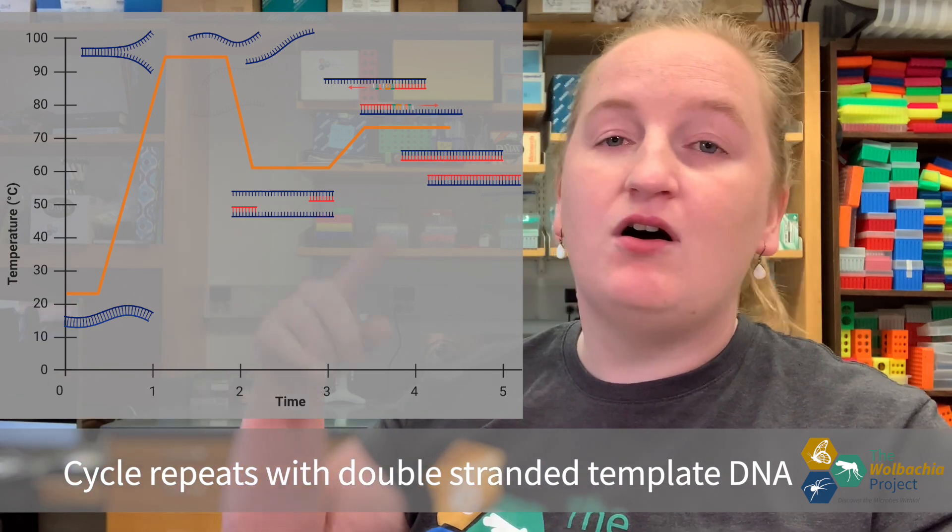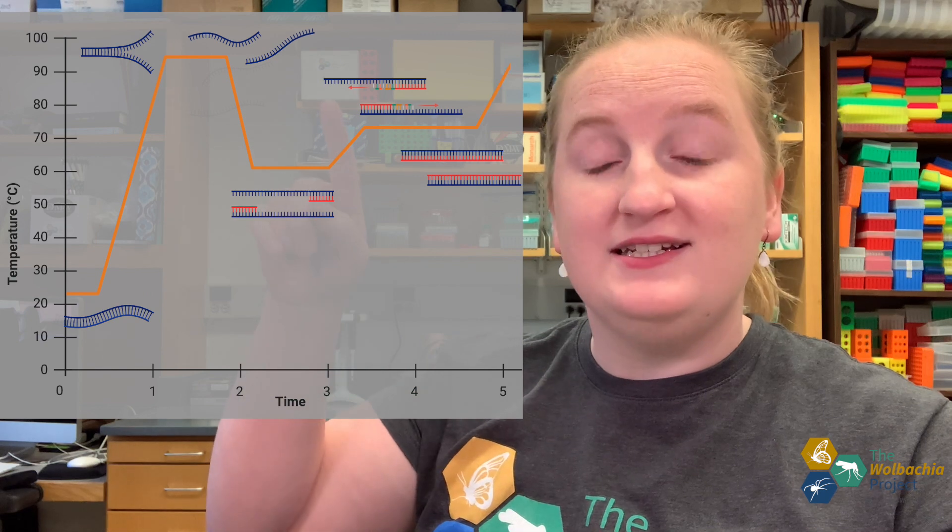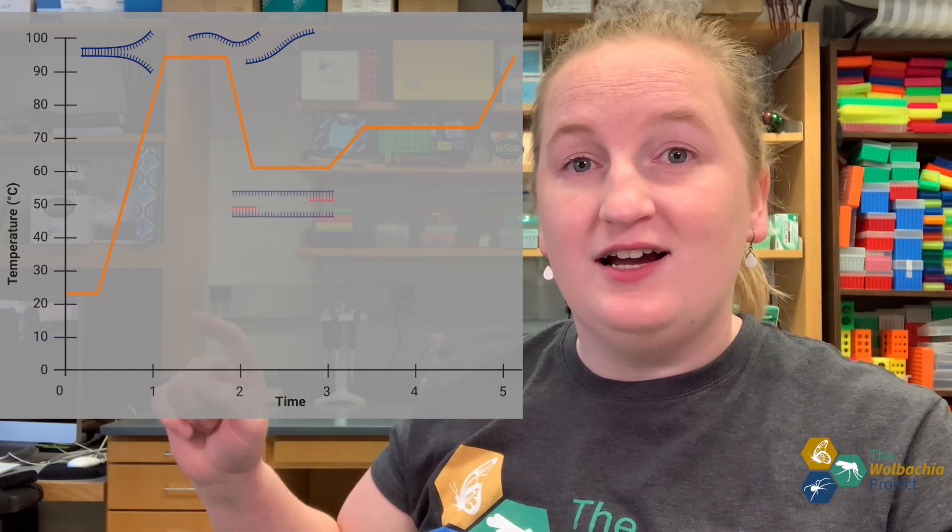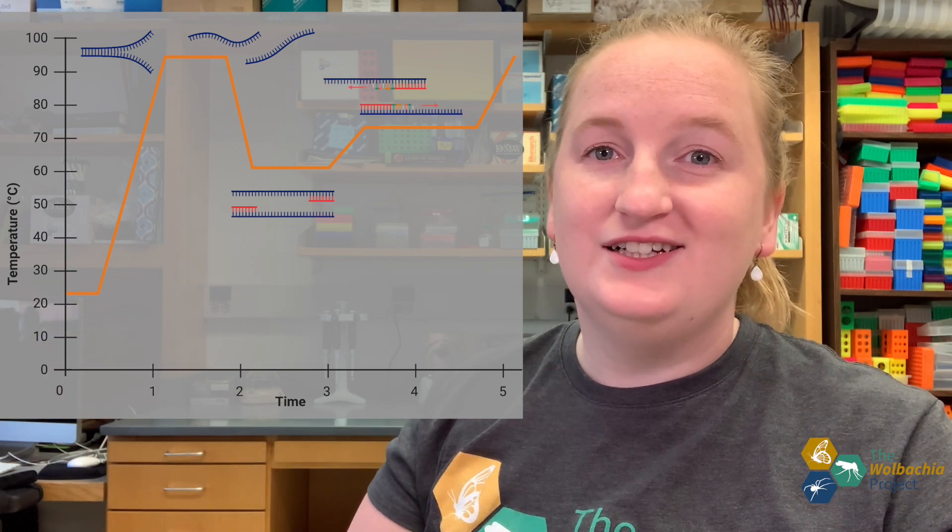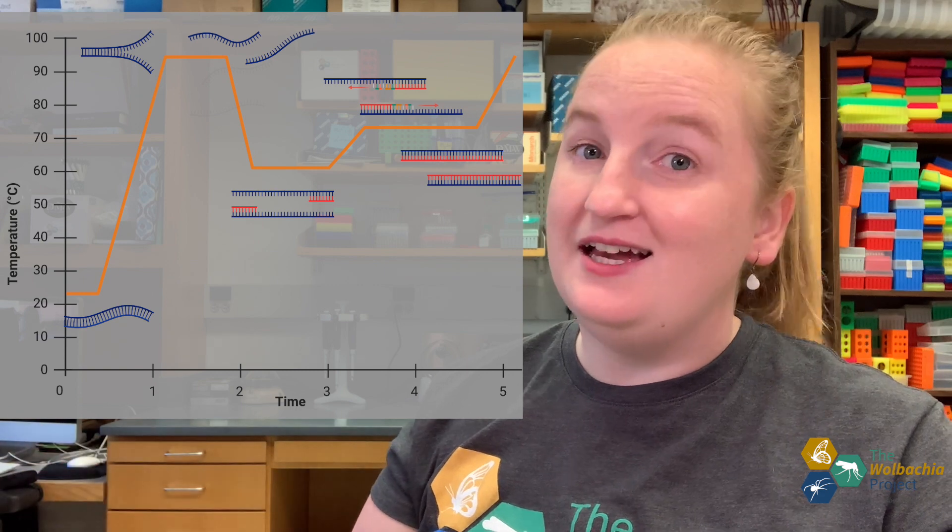The process then repeats all over again, with the cycle repeating and going back up to 94 degrees Celsius for denaturation, annealing, and extension. We'll repeat that whole process 30 times, and that's how you can amplify to over a billion copies.